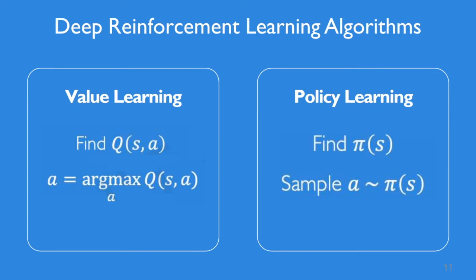If I want to categorize deep reinforcement learning, there are different types of categories such as model-based or model-free, but I prefer the categorization of value-based and policy-based learning. Today my objective is to focus on the value-based learning approach, because I have prepared a small coding tutorial for it. We may not have time for policy learning, but if you're interested, we can do another presentation on that. In value learning, key concepts include the Q function — which takes a state and an action as input — and the policy.